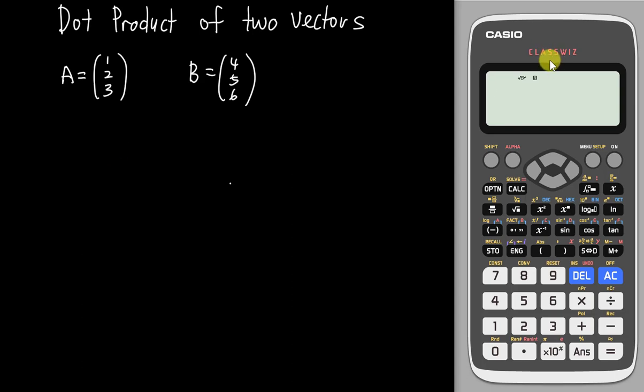Hi, this is another video sponsored by Casio Malaysia. In this video, I will teach you how to use the new Casio 570EX calculator to do the dot product of two vectors.